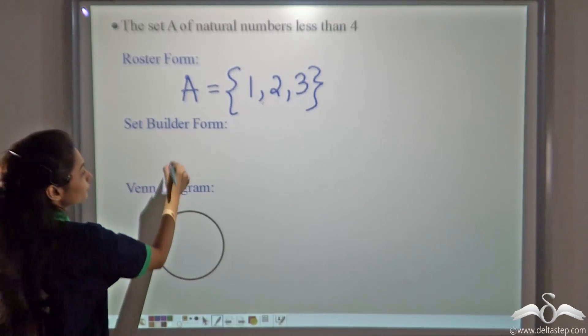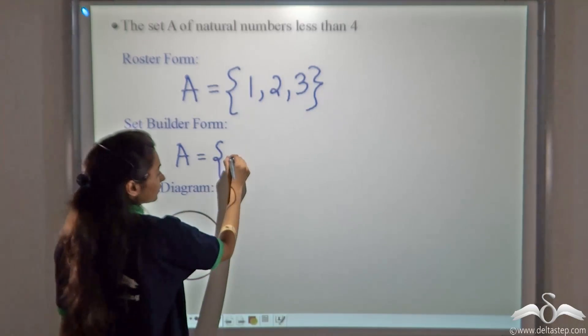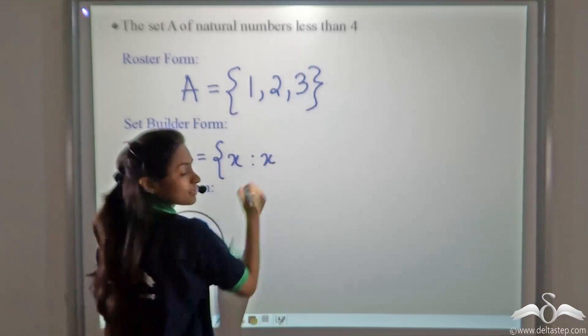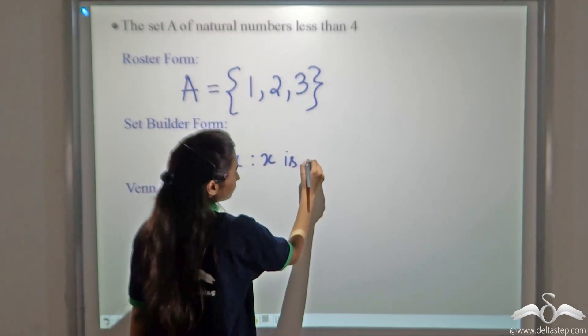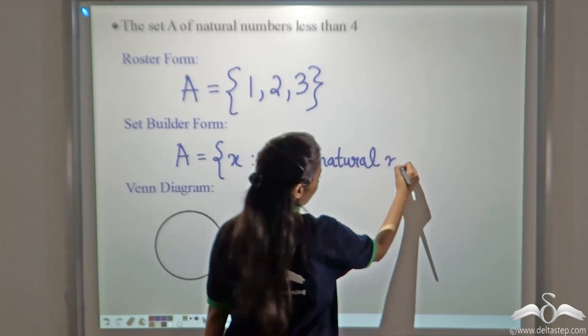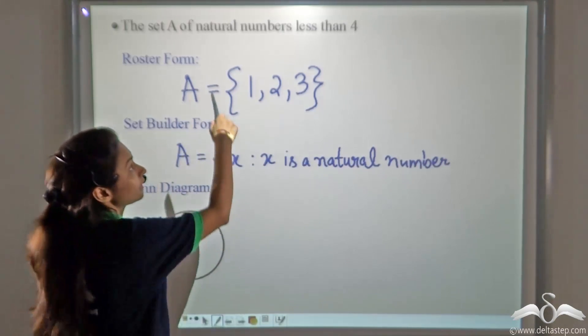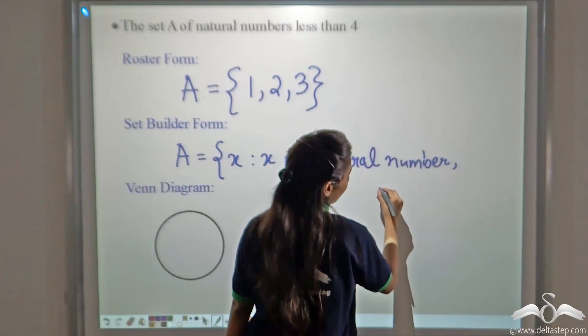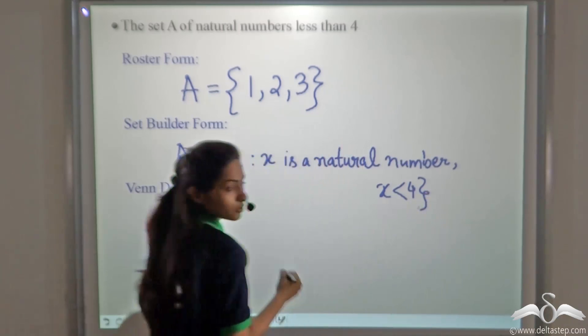In set builder form, A equals, we will take the variable X, use such that, that is the colon. Now we will list the property. X is a natural number. We have one more property. It is a natural number less than 4. So we put a comma and write the next property. So this gives our answer.